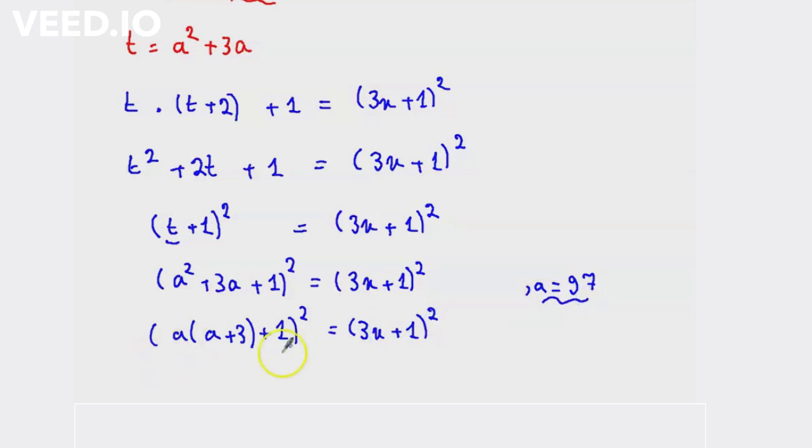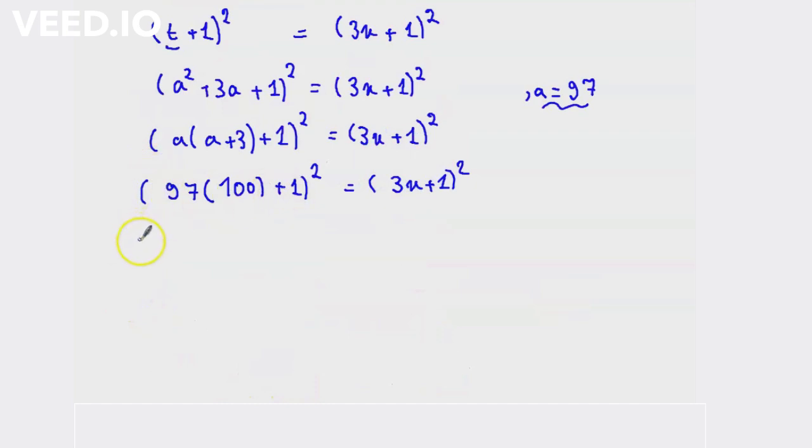Now substitute a equal to 97, so 97 times (97 + 3) equals 97 times 100 plus 1 squared equal to (3x + 1)². Now 97 times 100 equals 9700, so (9700 + 1)² equal to (3x + 1)².